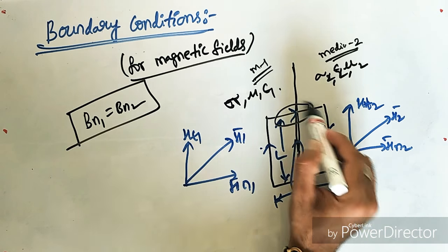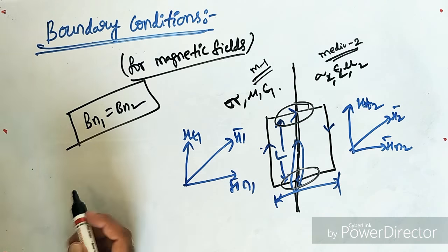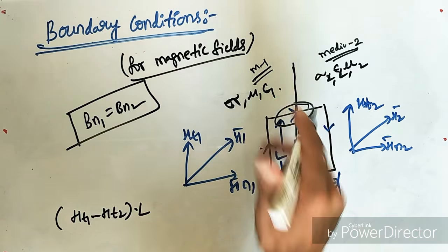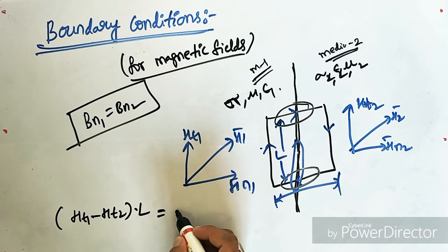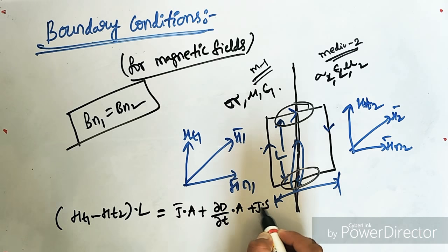If you write clearly, these two magnetic field components will have no significance and the equation will simply reduce us to Ht1 minus Ht2, tangential components, into the length of the loop equal to J bar dot A plus dψ D by dψ T into A plus J into S.